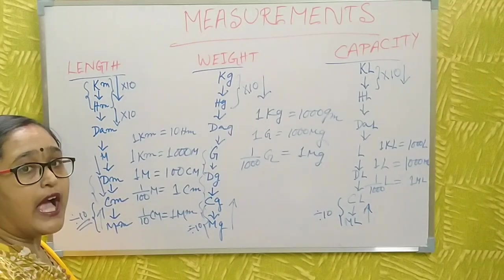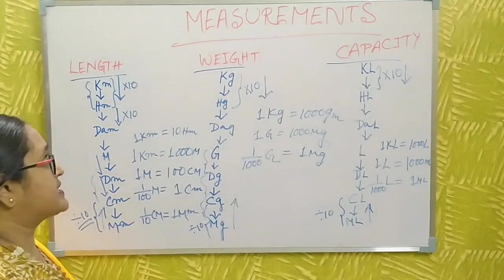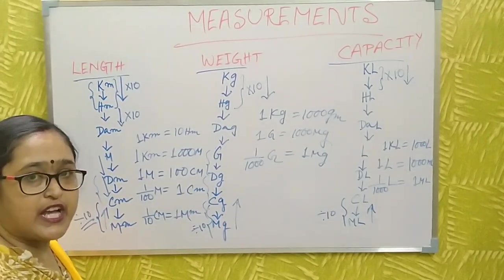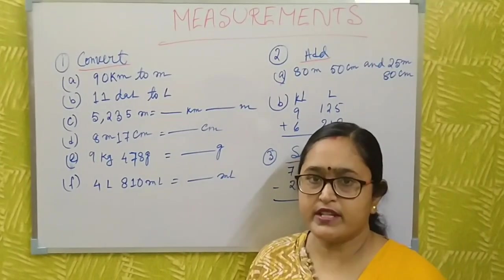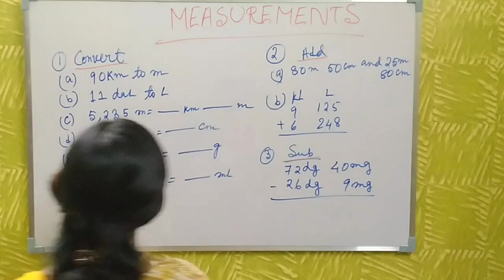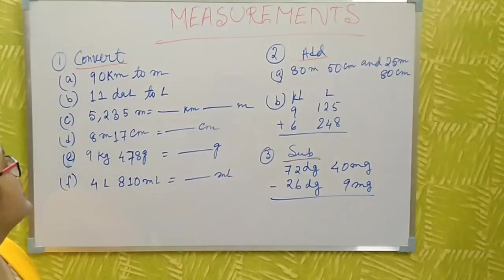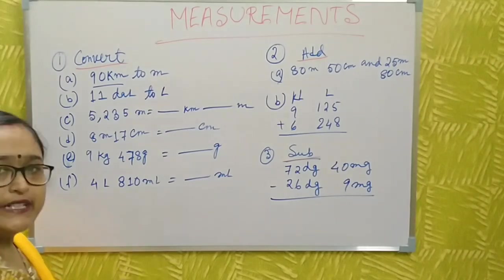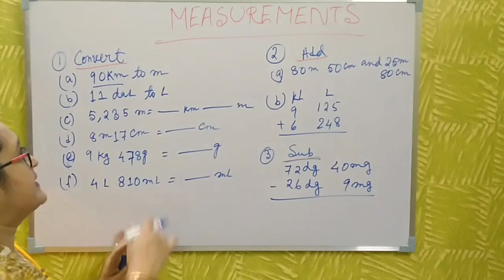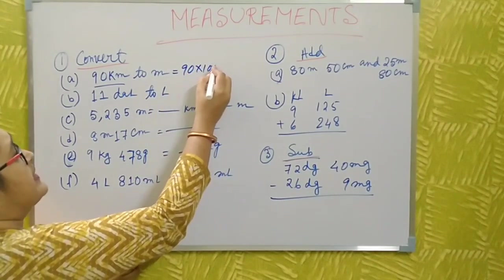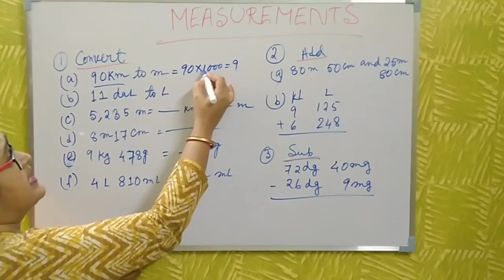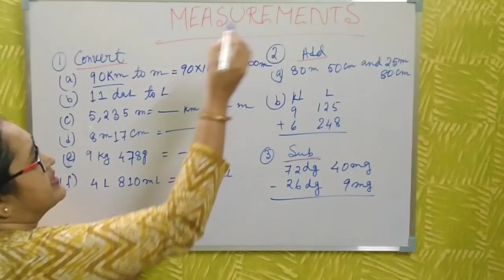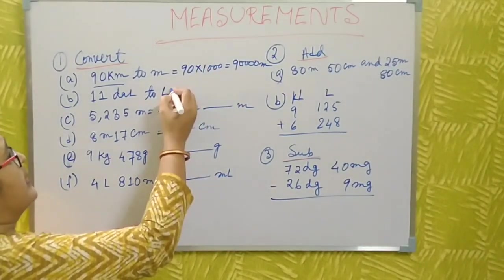Now I will discuss a few applications based on the three measurements — length, weight, and capacity — covering conversion, addition, multiplication, division, and subtraction. First, let's convert 90 kilometers to meters. Since 1 kilometer equals 1,000 meters, 90 kilometers equals 90 × 1,000 = 90,000 meters.